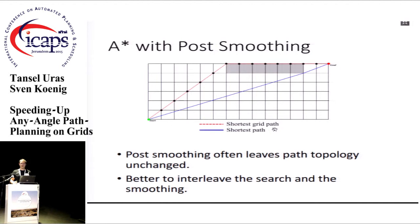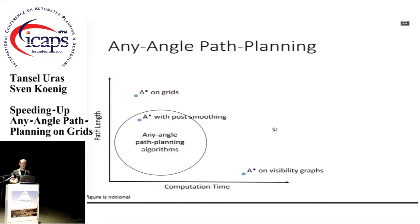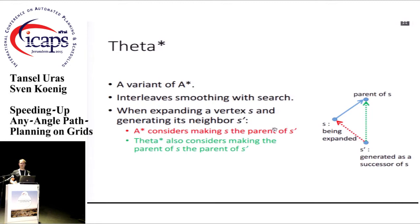The lesson is to interleave the search with the smoothing. For example, the red path shown is the shortest grid path, but smoothing would not make it shorter. That's exactly what Theta star does — it interleaves path smoothing with the search. It's a very slight variation of A-star. Suppose we are expanding a vertex and generating a new vertex, and we want to figure out what the parent of that vertex will be.